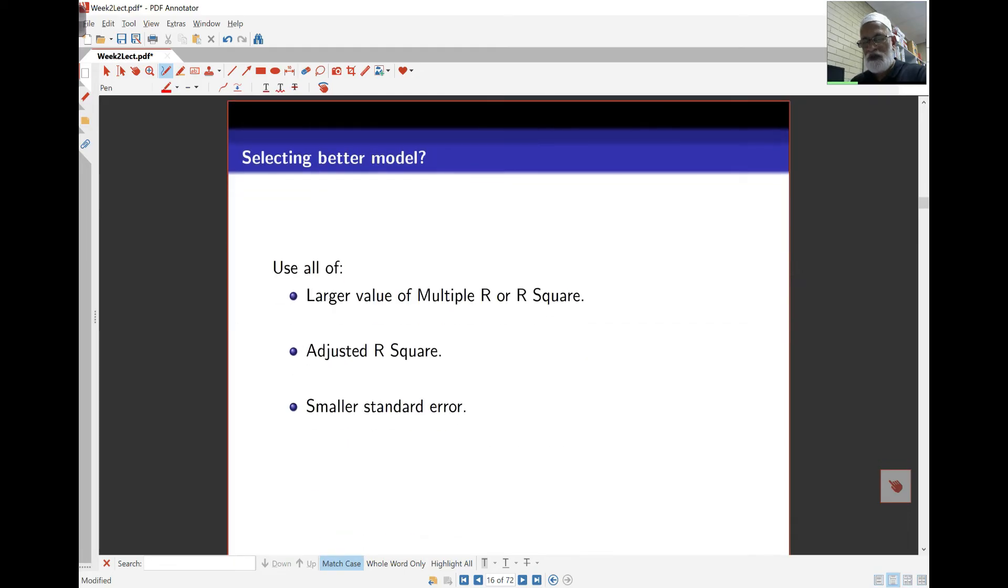So a better model can be selected by all of these. You want a larger multiple R or R squared, you want an adjusted R square that increases as well. And you want also a smaller standard error. And we'll see some other ideas as we go through here. This is important because this actually measures the amount of misfit in the data, the residual standard error.